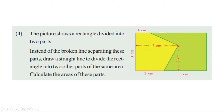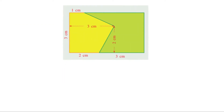Second problem: the picture shows a rectangle divided into two parts. Instead of the broken line separating these parts, draw a straight line to divide the rectangle into two other parts of the same area, and calculate the areas of these parts. The rectangle is divided into two parts using broken lines; we have to replace those with a single straight line such that the two parts still have equal area.